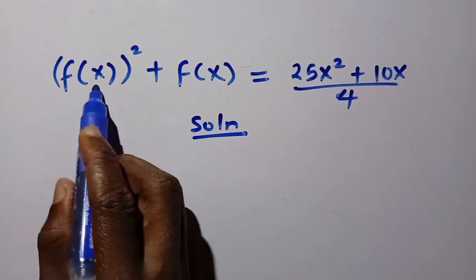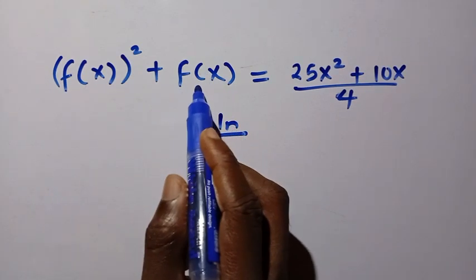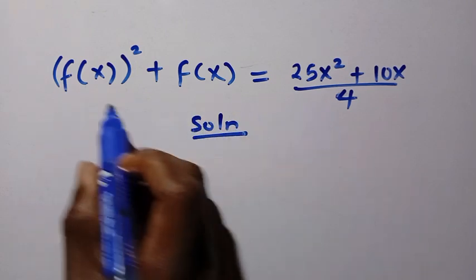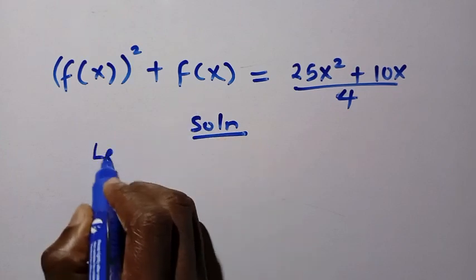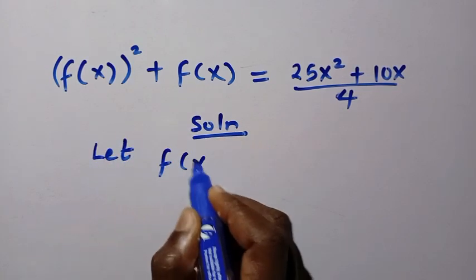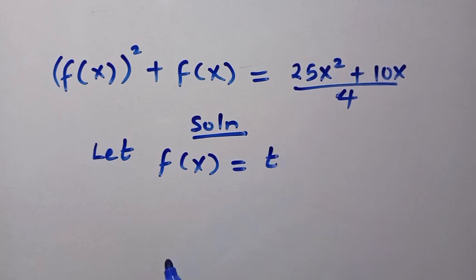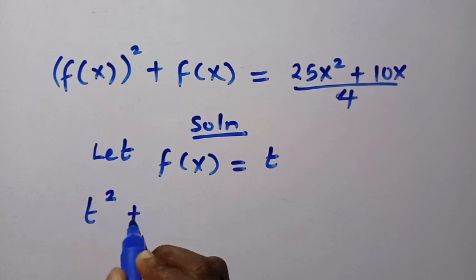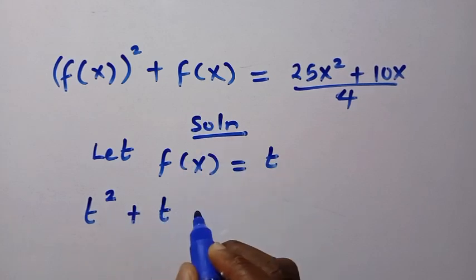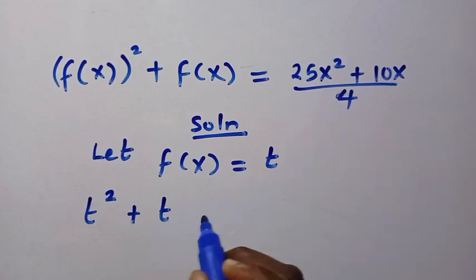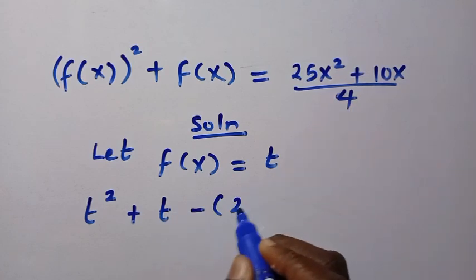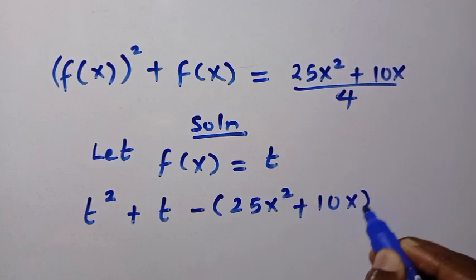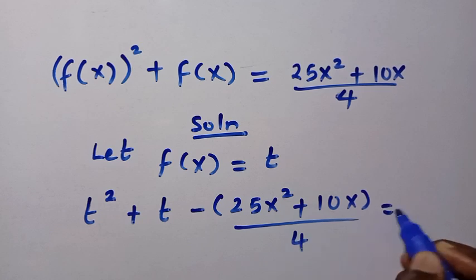By considering the solution, here we have f of x squared and this is f of x — this looks like a quadratic. So let's let f of x be a particular variable, call it t. Then we change this to t squared plus t, and taking everything to one side we get negative open bracket 25x squared plus 10x divided by 4 equals 0.